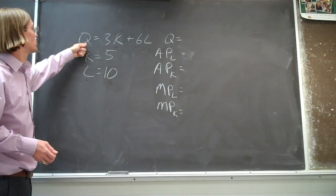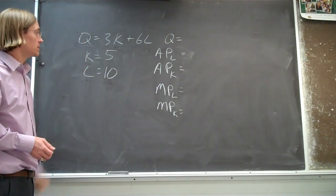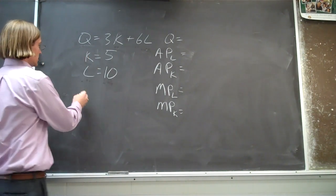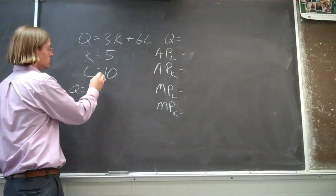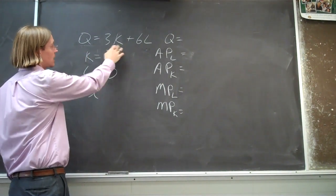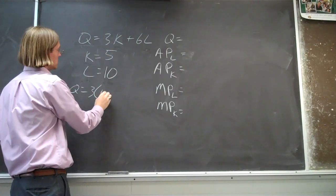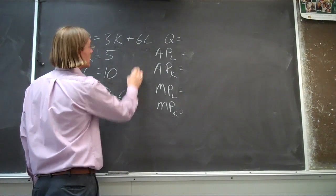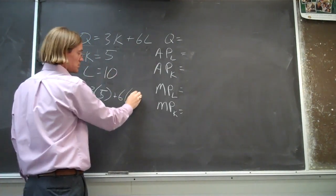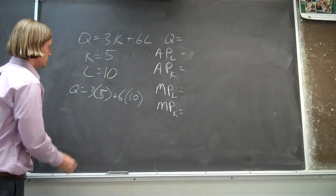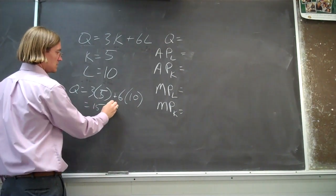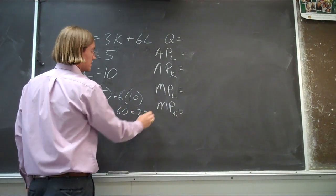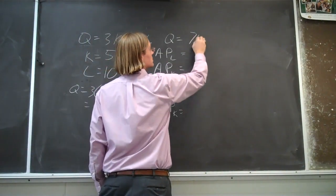Let's start by figuring out Q. Q is equal to three times the amount of capital — five units of capital — plus six times the amount of labor we're using. So it should be fifteen plus sixty, which is seventy-five. So Q is equal to seventy-five.